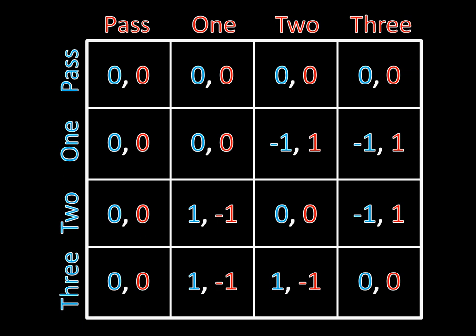Here's what the payoff matrix looks like. Each player has four strategies: they can either pass or they can send one unit, two units, or three units into battle. If one side passes, then it's an automatic draw — that's those seven different outcomes. In three outcomes, the generals are sending the same number of units out, so they're drawing as well. In three other outcomes, player one is sending more units than the second general, so he's winning. And the opposite is true in the other three, where general two is sending more units out than general one, so general two is winning.